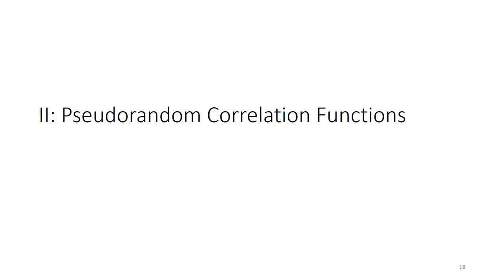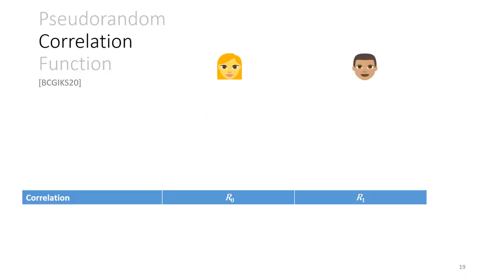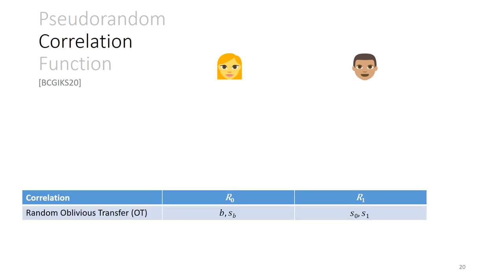In the second half of the talk we'll look at pseudorandom correlation functions. A pseudorandom correlation function, or PCF, gives us a way of obtaining a large amount of correlated randomness with minimal interaction. A correlation can be seen as a distribution which outputs a pair of strings r0 and r1 given privately to Alice and Bob, and depending on the correlation this can be used in secure two-party and multi-party computation protocols. One common example is the oblivious transfer correlation: Bob gets two random strings s0 and s1, while Alice gets one of them s_b and a random bit b; Bob doesn't learn which Alice got and Alice doesn't learn the other. Another useful correlation is oblivious linear evaluation (OLE): Alice and Bob get random field elements x and y together with additive secret sharings of the product x times y.